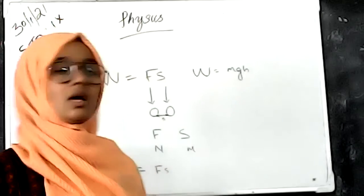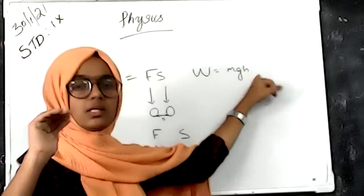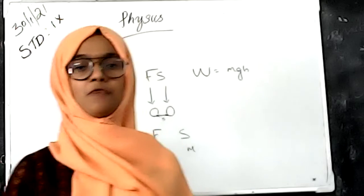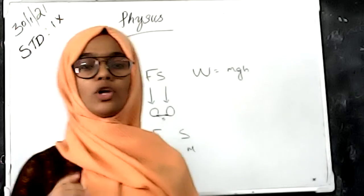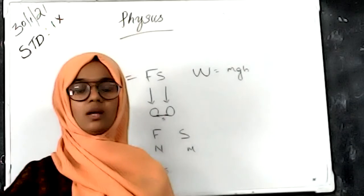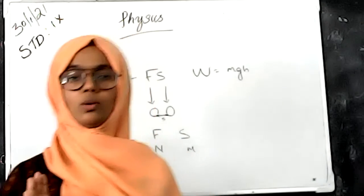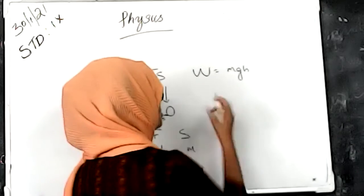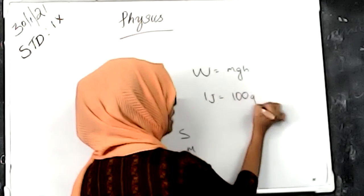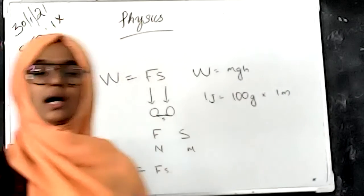One Joule is defined as: a body of 100 gram weight lifted to a height of 1 meter. So 1 Joule equals 100 gram-weight times 1 meter distance in height.